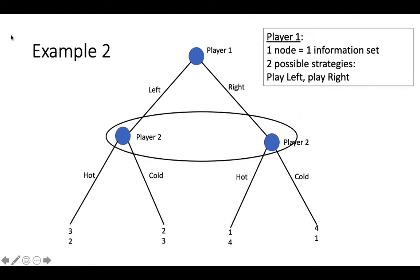Let's contrast this example with the simultaneous version of the same game. Player 1's strategy set is the same — they have two strategies: play left or play right. However, the situation is different for player 2. Because player 2 only has one information set, they only have two strategies as well: play hot or play cold. In the case of the simultaneous game, each player only has two possible strategies in their strategy set.